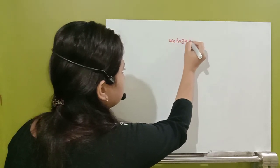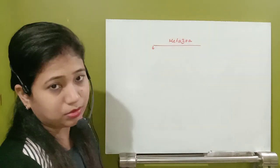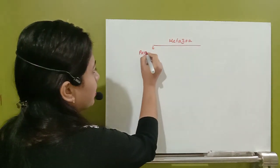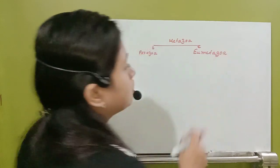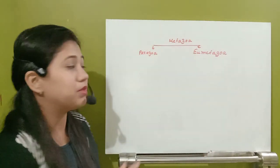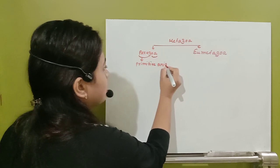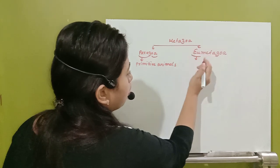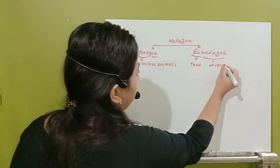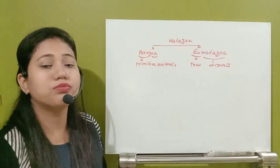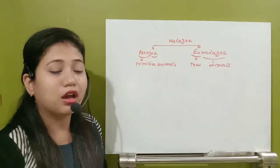Animals are also known as Metazoa, so this Metazoa is actually a kingdom. This animal kingdom is divided into two sub-kingdoms. The first sub-kingdom is Parazoa and the second sub-kingdom is Eumetazoa. 'Para' means primitive and 'zoa' means animal, so Parazoa means primitive animals. Eumetazoa means true animals.